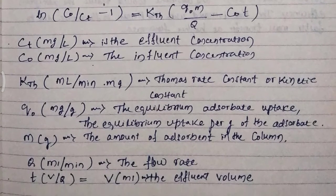Q is the flow rate, with units of mL per minute. t can be written as V/Q, where V is the effluent volume in mL.